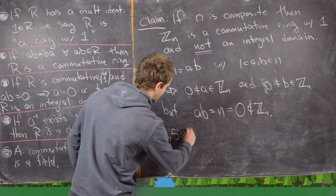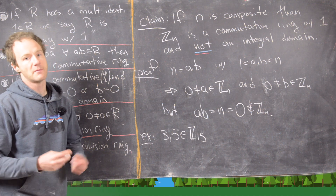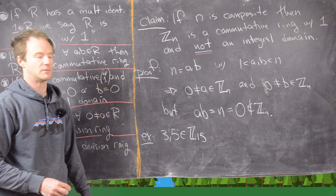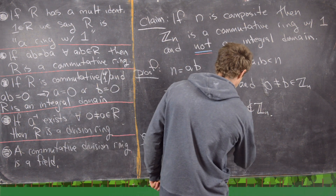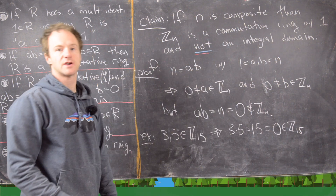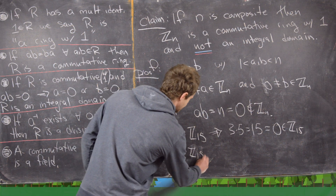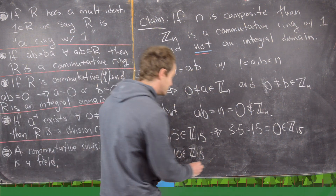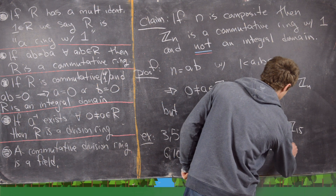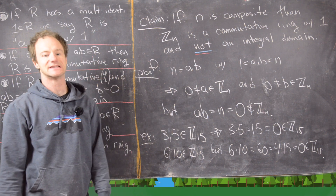For example, in ℤ₁₅ we have 3 and 5, neither of which equals 0 in ℤ₁₅ since neither is a multiple of 15. But 3×5 = 15 = 0 in ℤ₁₅. Another example: 6 and 10 are in ℤ₁₅, both non-zero, but 6×10 = 60 = 4×15 = 0 in ℤ₁₅. This confirms that ℤ₁₅ is not an integral domain.